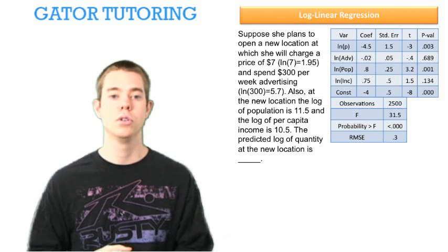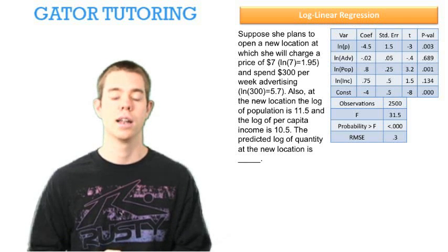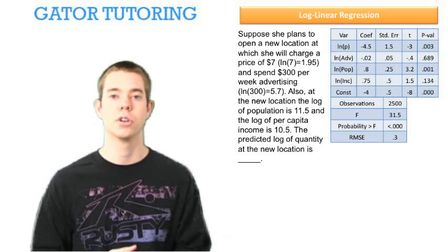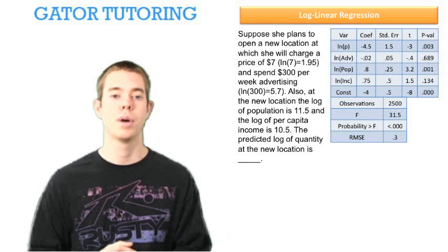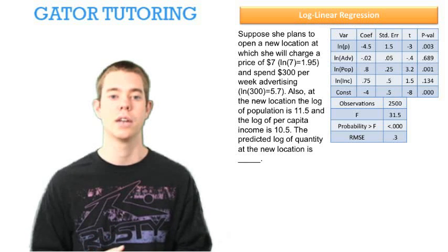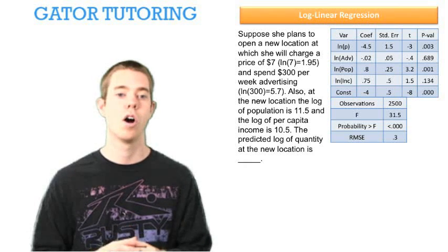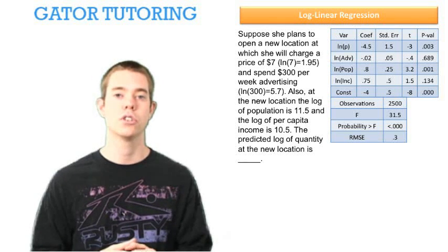Suppose she plans to open a new location at which she will charge a price of $7, so the ln of 7 is 1.95, and spend $300 per week advertising, the ln of 300 is 5.7. Also, at the new location the log of population is 11.5 and the log of per capita income is 10.5. So they've done some work, they've just given that to us in the log form already. The predicted log of quantity at the new location is blank.